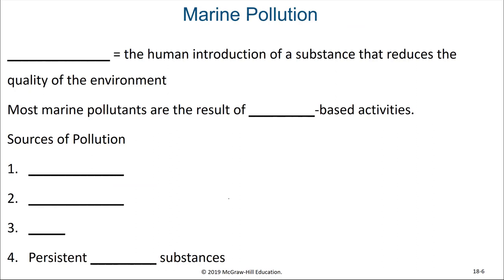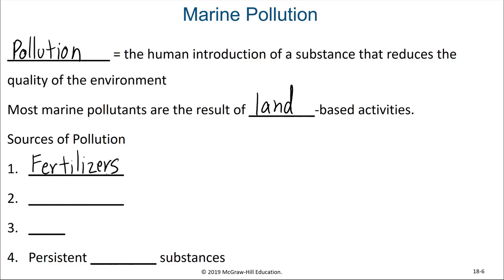Pollution is another way that humans harm habitats. Pollution is defined as the human introduction of a substance that reduces the quality of the environment. Most marine pollutants are actually the result of land-based activities. These sources of pollution include fertilizers, sewage, oil, and persistent toxic substances.